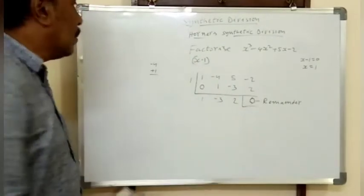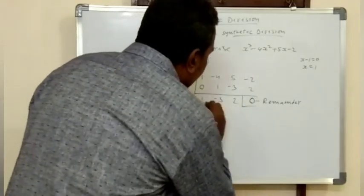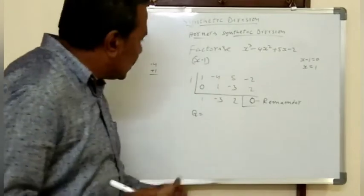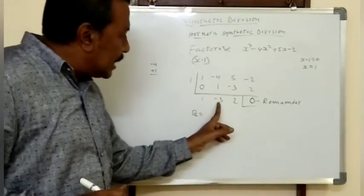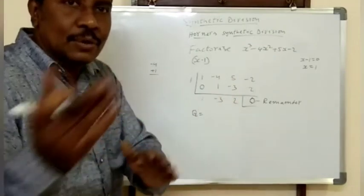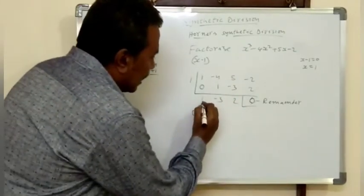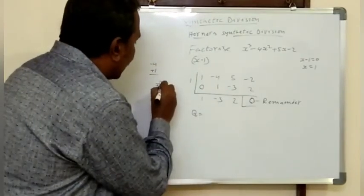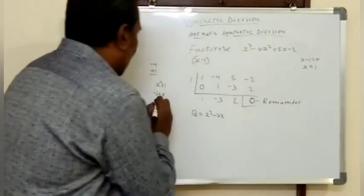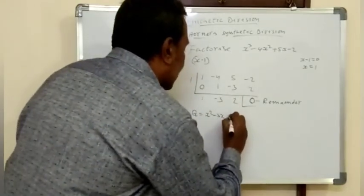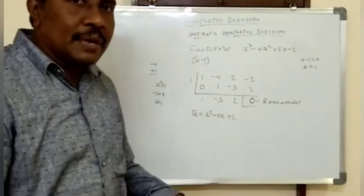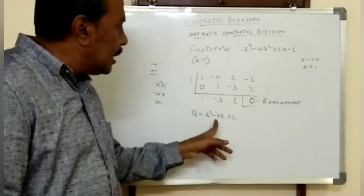The remaining values are the coefficients of the quotient. Since the original polynomial was degree 3 and we divided by a degree-1 term, the quotient is degree 2. So the quotient is x squared minus 3x plus 2. Without performing any actual division, we found the quotient.